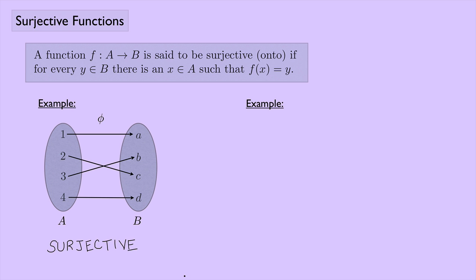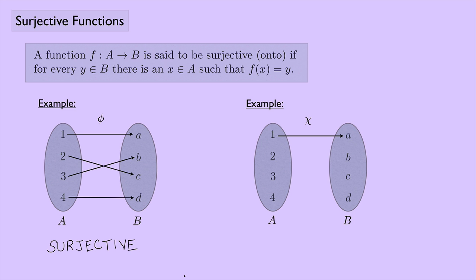Now let's look at another example with the same sets A and B. I define a function chi that maps 1 to a, 2 to c, 3 to c, and 4 to d. Is this surjective? Looking at set B: chi of 1 equals a — fine. But for b, nothing gets mapped to b. So the function chi is not surjective, because it doesn't meet the requirements of the definition.